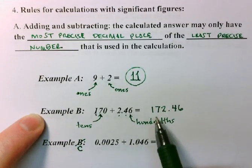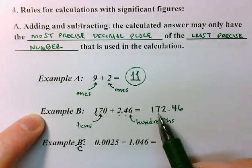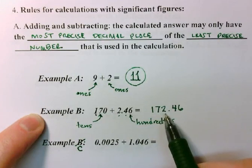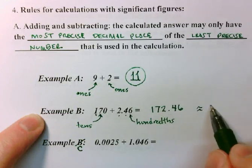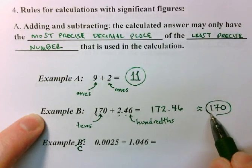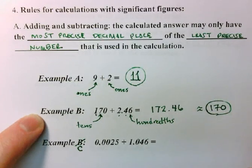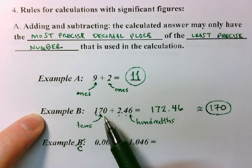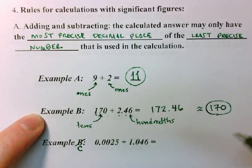Because this needs to be rounded to the tens place, I take a look at the digit after that, and because it's less than five, this rounds down to a zero. So my scientifically significant answer is one hundred and seventy. Now some students look at this and they see this is very strange. I have one hundred and seventy, I add two point four six, and my answer is one hundred and seventy.